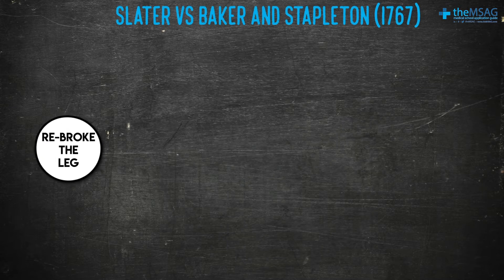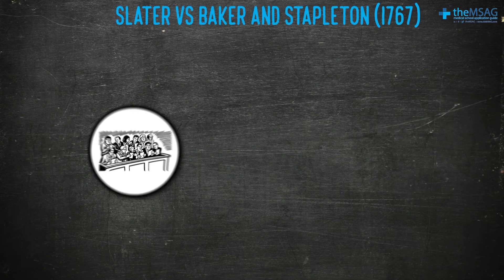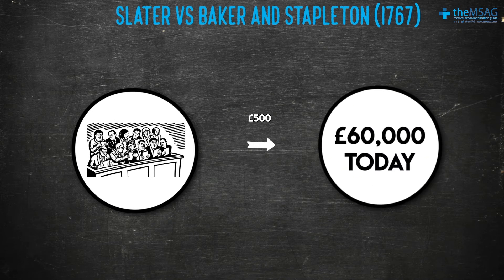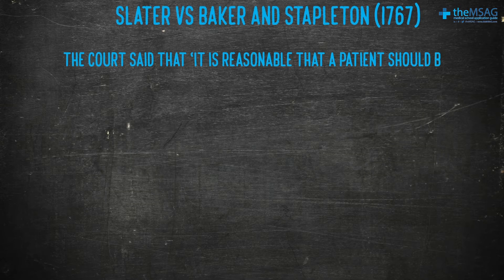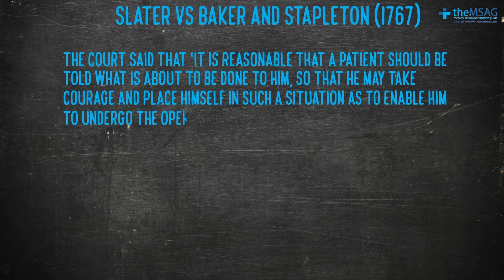They rebroke his leg and set it in a heavy steel device with teeth to stretch it, with very poor results. The jury awarded Slater £500, approximately £60,000 in today's currency. The court said it is reasonable that a patient should be told what is about to be done to him, so that he may take courage and place himself in such a situation as to enable him to undergo the operation.